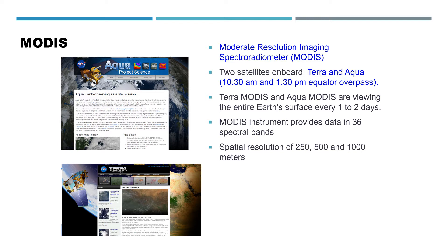The Terra satellite has an equator overpass of 10:30 a.m., whereas the Aqua satellite has a 1:30 p.m. equator overpass. Terra MODIS and Aqua MODIS are viewing the entire Earth's surface every one to two days.